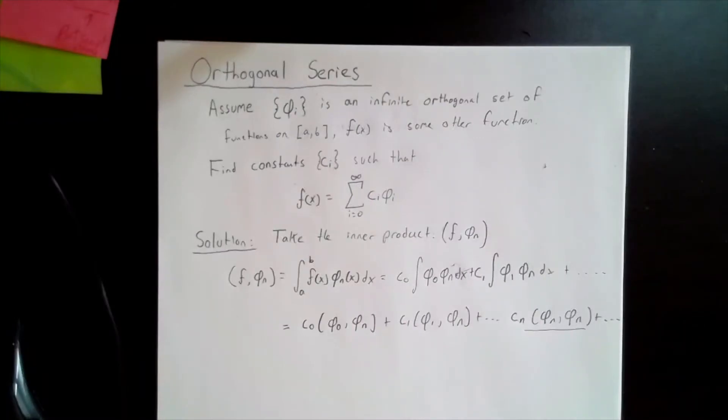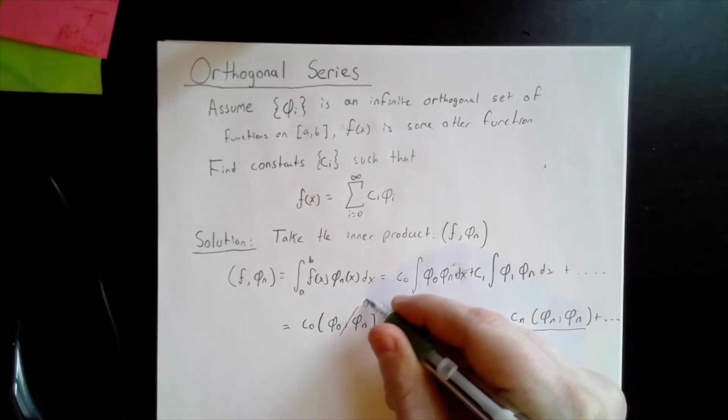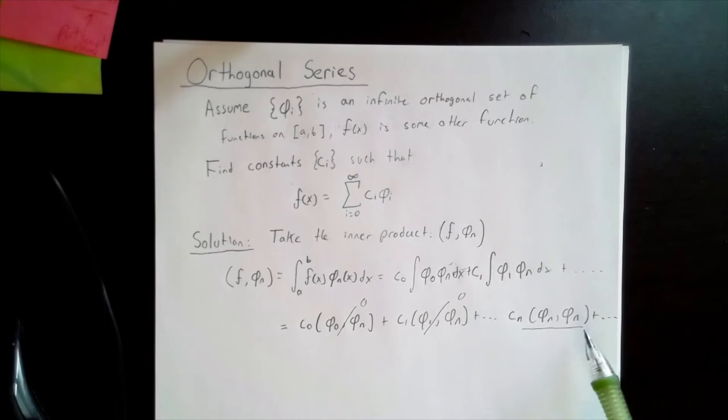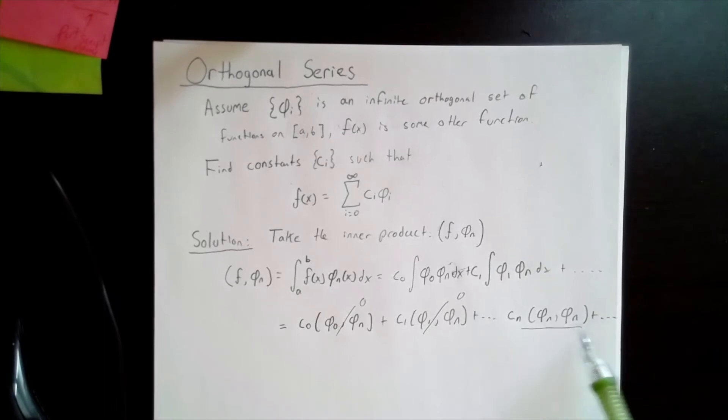By the definition of orthogonal functions, each member in this sum is equal to 0, except this one, which contains the inner product of phi i with itself.